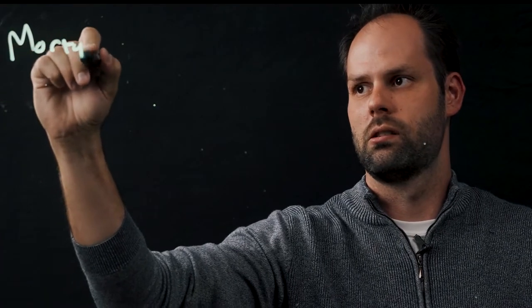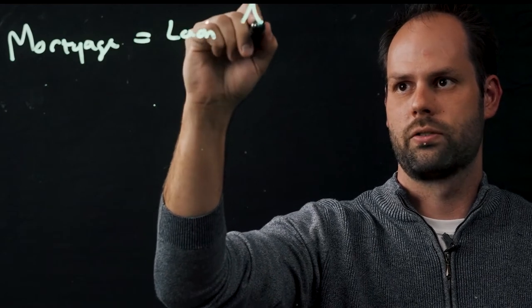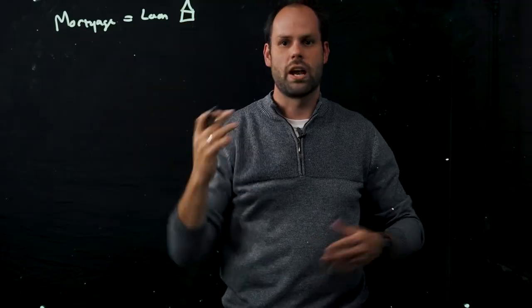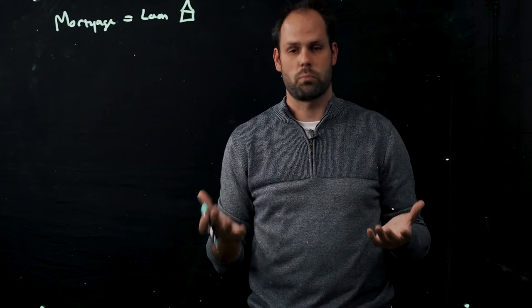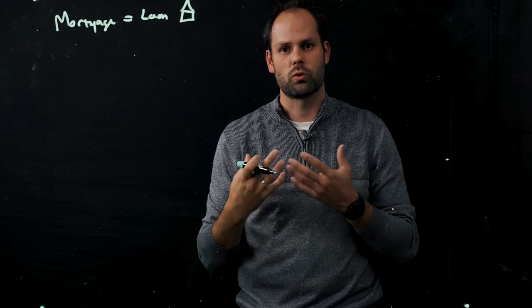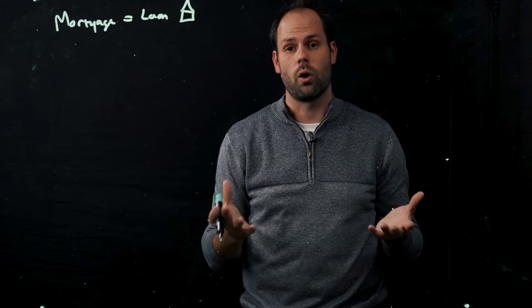So what is a mortgage? A mortgage is really just a loan against any piece of real property. And by real property, I just mean land or a house or something constructed on a building that's not going to move. So mortgage equals a loan on a house. Generally speaking, the only people that can get a mortgage are people that actually own the property itself. So if we're renters, unfortunately, we're not going to be able to get a mortgage against that property because we don't own it.